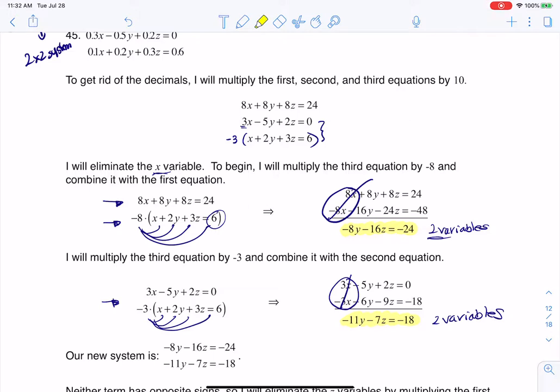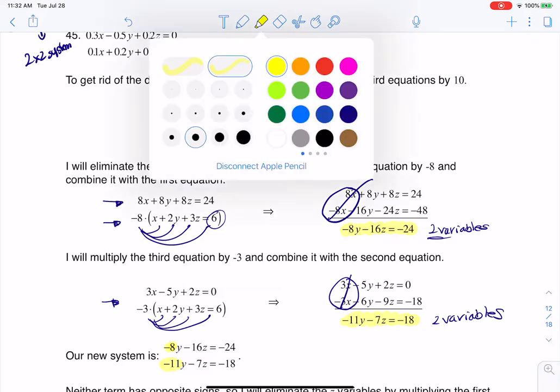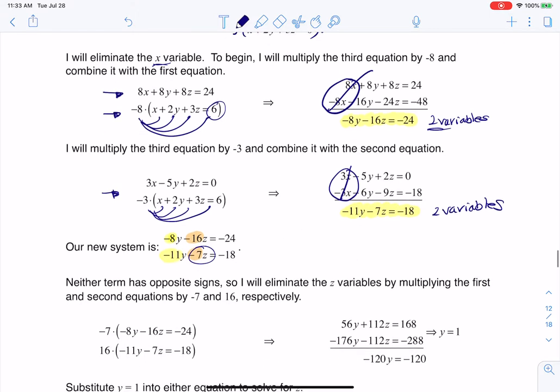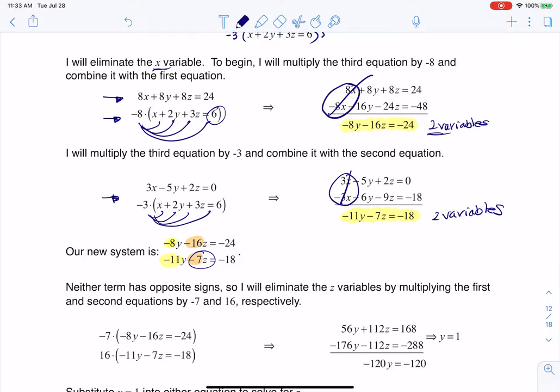All right, let's go ahead and analyze the coefficients. I've got a negative 8 and a negative 11, that's not really great, and then I've got a negative 16 and a negative 7, so nothing's good. There's no positive 1, none of these have opposite signs, so just dealer's choice. I'm going to go ahead and I'll eliminate the z's. Since I don't see a GCF between them, what I'm going to do is I'm going to multiply this one by 7, and I'll do this one by negative 16, so that I can make their signs opposite.